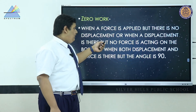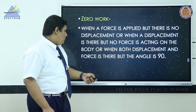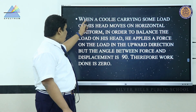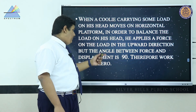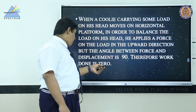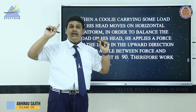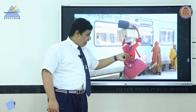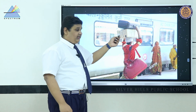Zero work occurs when force is applied but there is no displacement, or when displacement is present but no force acts on the body, or when both force and displacement are present but the angle between them is 90°. For example, when a coolie carries luggage on his head and moves horizontally, he applies a force upward on the load, but the angle between force and displacement is 90° — therefore, work done is zero.